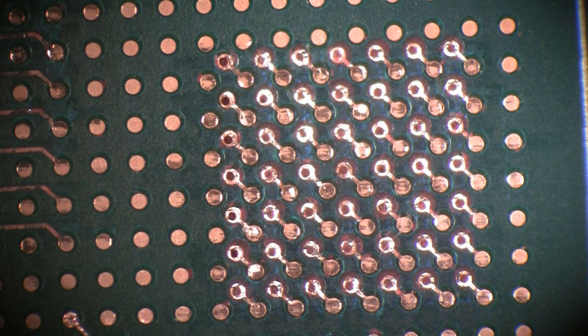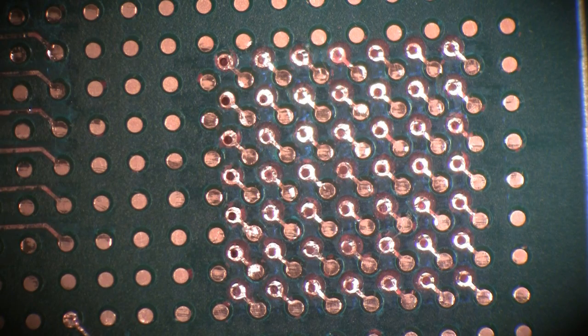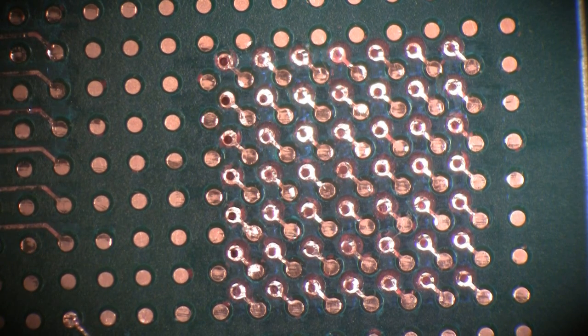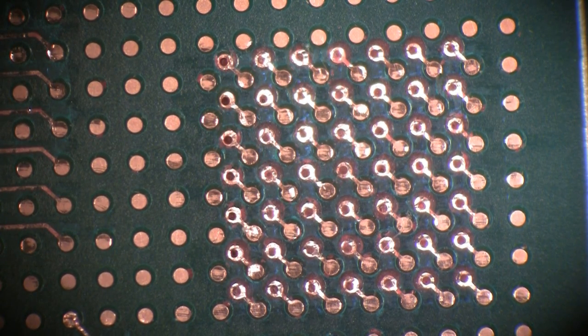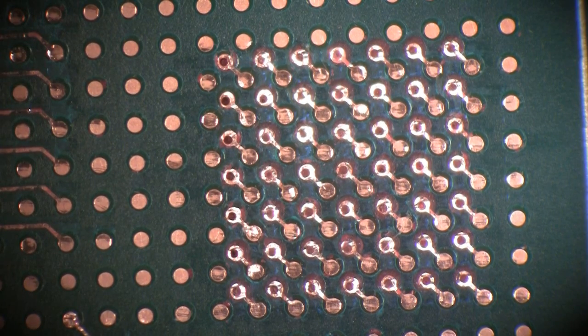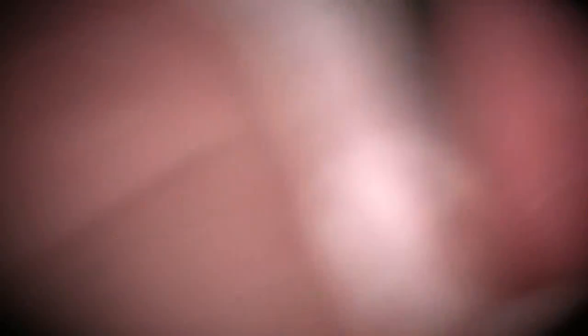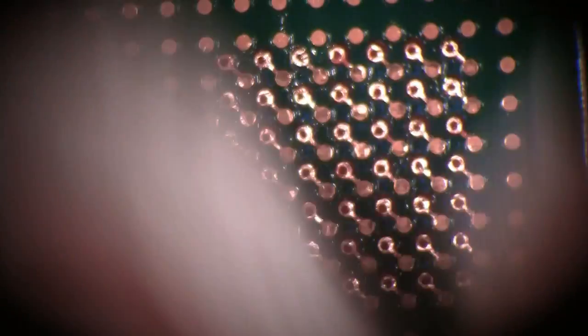First thing you want to do as always is to clean the area, make sure it's nice and clean and does not have any contamination. So what I'm going to do is take a kim wipe and some isopropyl alcohol and clean my area just like this.